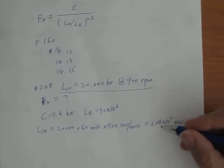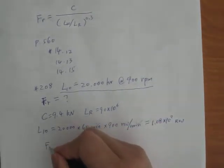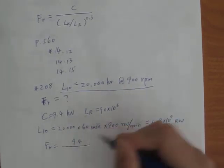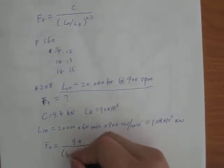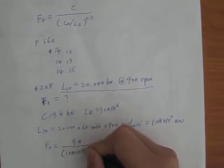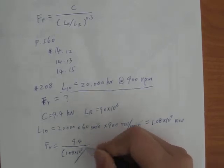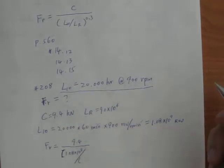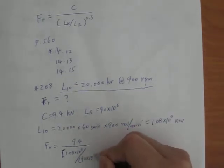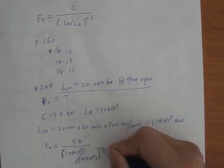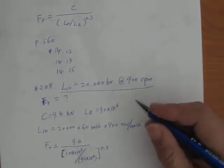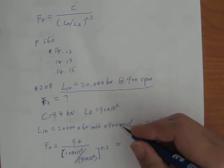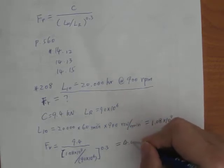Then we're gonna plug in this number here. So we have FR is equal to 9.4, our final units will be kilonewtons, and 1.08 times 10 to the 9 divided by—be careful here in your calculator, you probably want to use a bracket—90 times 10 to 6 and point 3. So that's gonna give you 4.46.